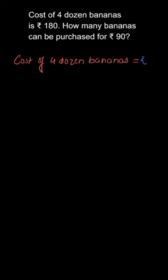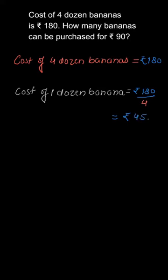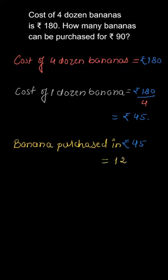bananas is ₹180, then cost of 1 dozen banana will be 180÷4, and that will be ₹45. So bananas purchased in ₹45 is equal to 12. Correct - in ₹45 you can purchase